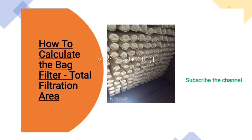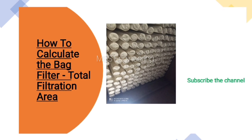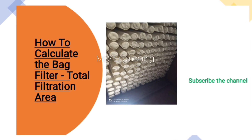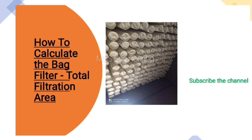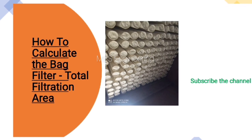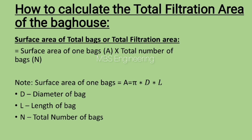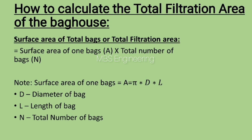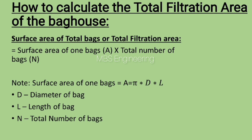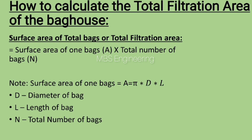Welcome to our channel. We are going to discuss how to calculate the total filtration area of the baghouse. The total filtration area equals the surface area of one bag multiplied by the total number of bags.